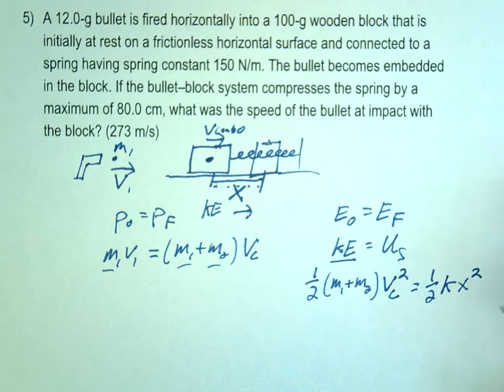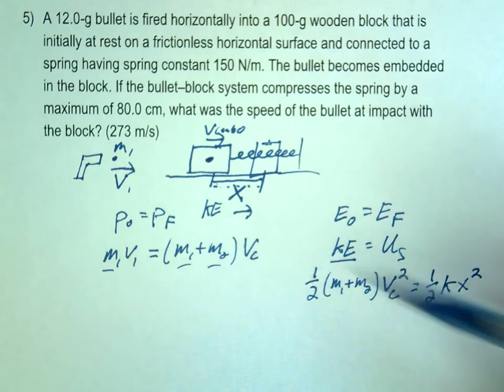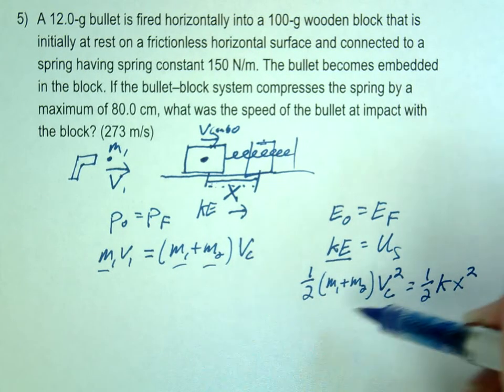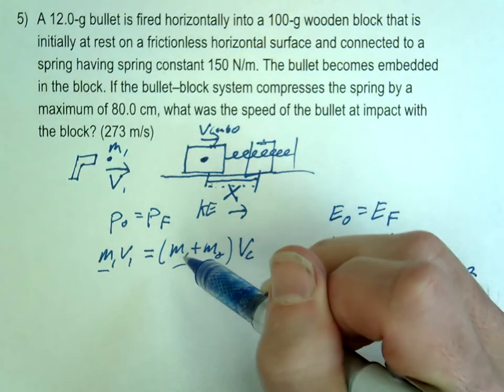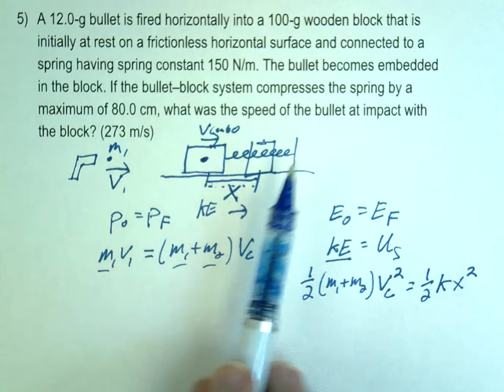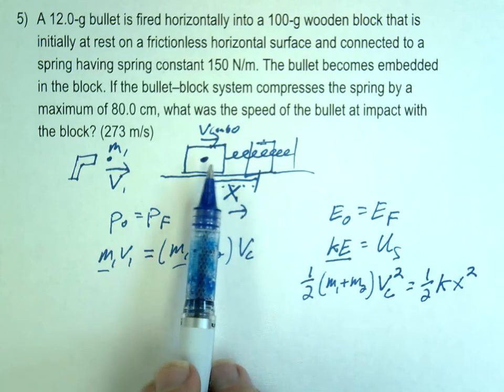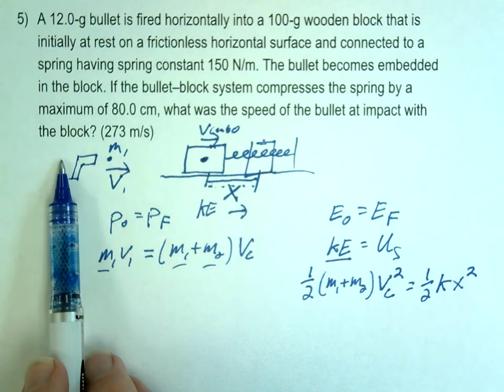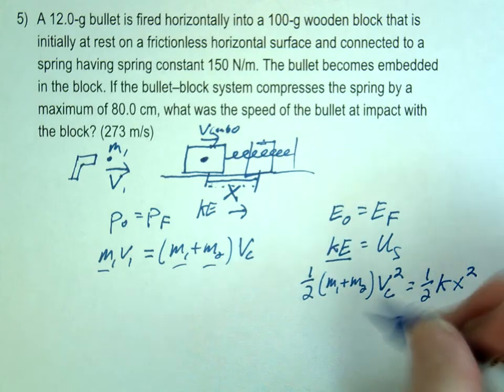If you want, you can substitute one equation in for the other and solve it that way. At this point, it might be just a little bit easier if we just find v combo first. And then we can go backwards. This one's kind of a tricky problem because we're really visualizing this in reverse. We're imagining that it's stuck here. And then it's coming back to here. So we're kind of solving this in reverse as we do it. So let's solve for v combo.